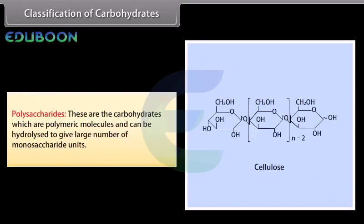Polysaccharides are carbohydrates which are polymeric molecules and can be hydrolyzed to give a large number of monosaccharide units. For example, starch, glycogen and cellulose.